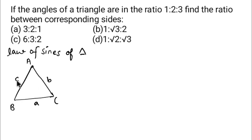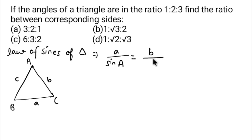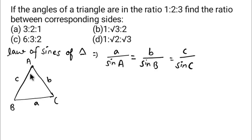The side opposite to angle B is side b, and the side opposite to angle C is side c. So for triangle ABC with sides a, b, c, the Law of Sines states: a / sin(A) = b / sin(B) = c / sin(C). This is the Law of Sines for a triangle.